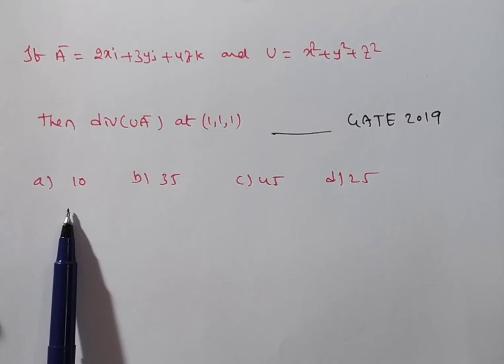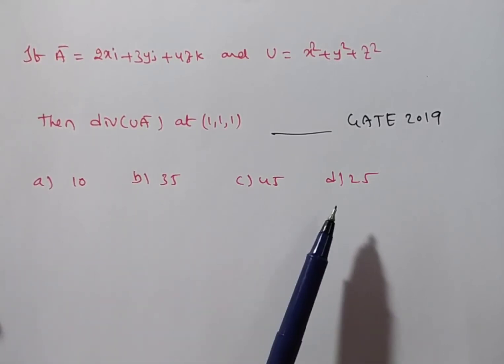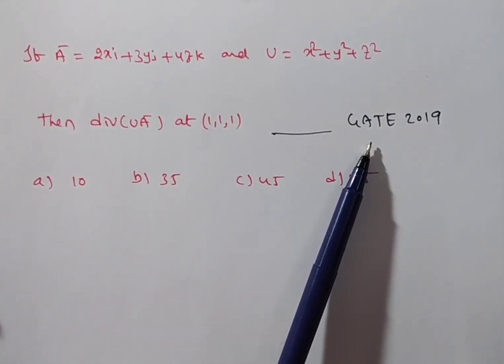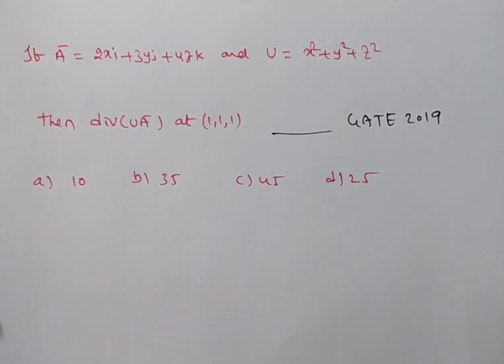They are given options, a is 10, b is 35, c is 45, d is 25. This came in the gate entrance exam 2019 year.